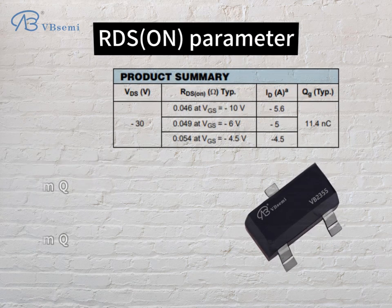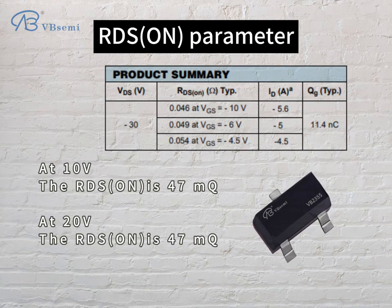RDS(on) parameter: at 10V, RDS(on) is 47mΩ; at 20V, RDS(on) is also 47mΩ.